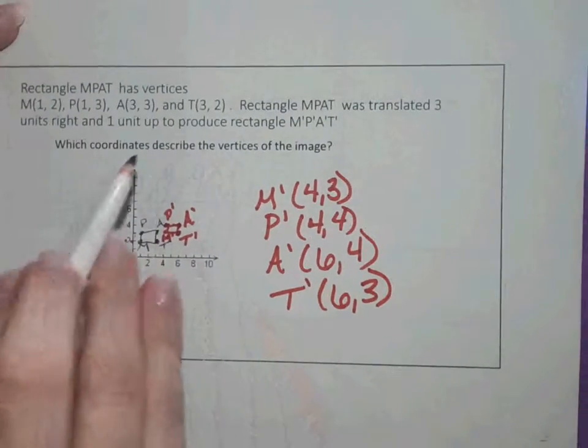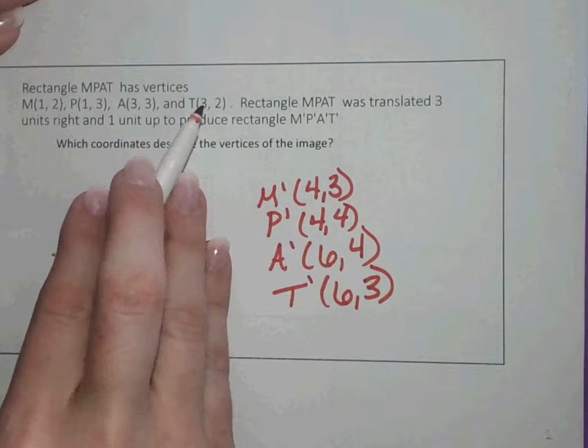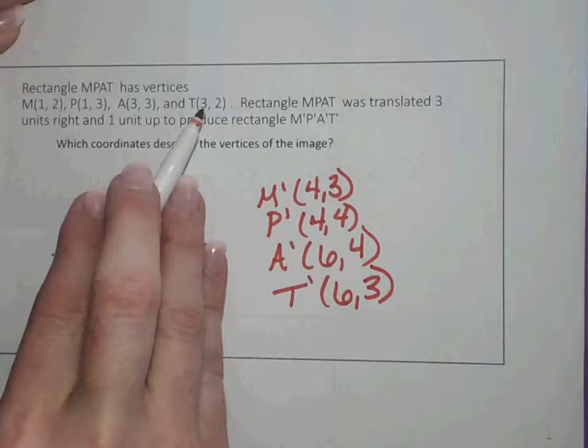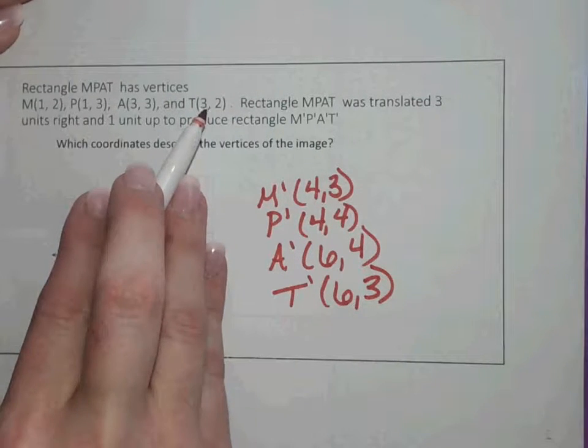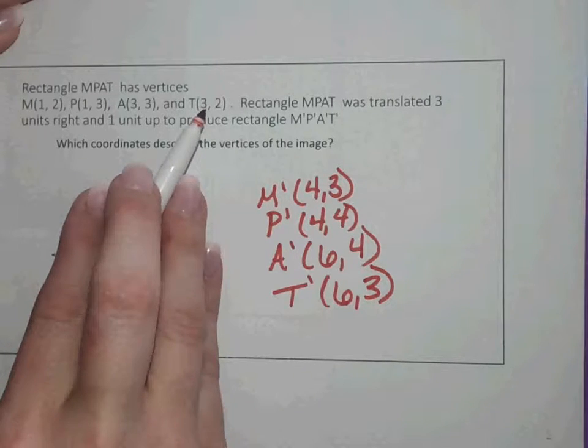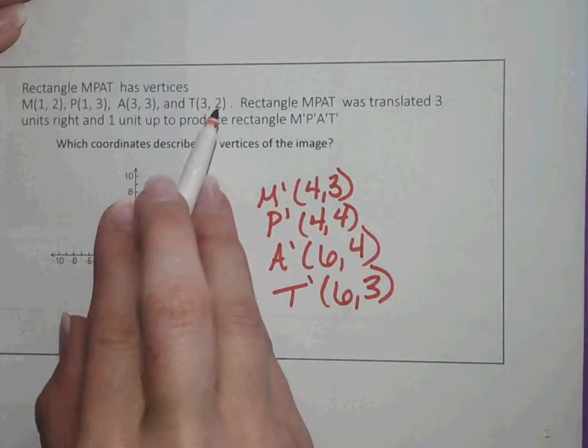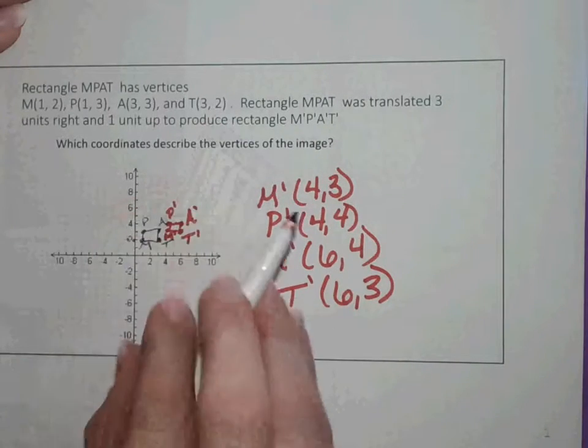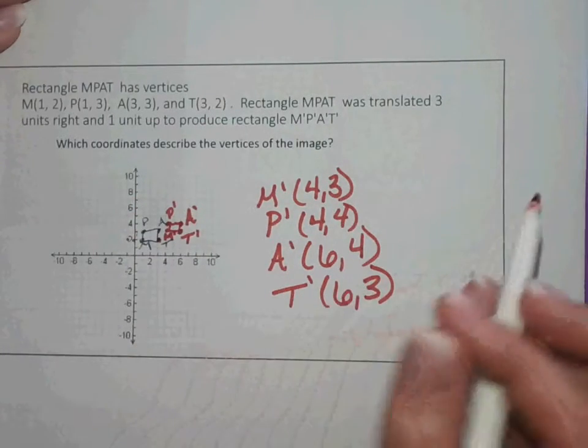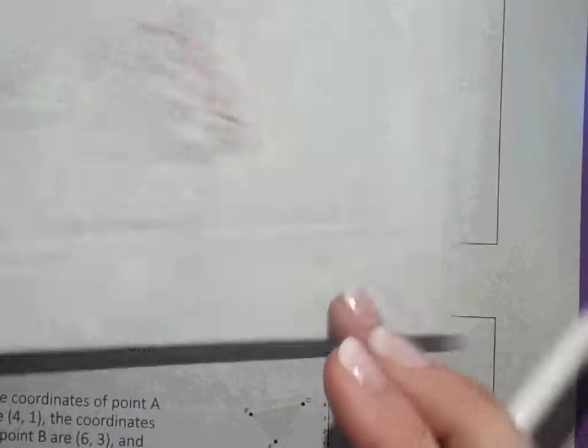So what happened with these? If you look, three units to the right, that's what affects that X value. So you added three here to give you 6. And up one unit added one to your Y value, and that gave you 3. So you could do that either way.